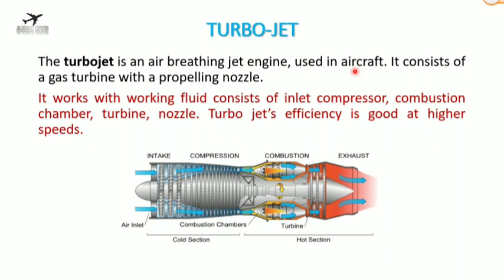The turbojet is an air-breathing jet engine used in aircraft. It consists of a gas turbine with a propelling nozzle. An air-breathing engine requires air to produce thrust, whereas rocket engines are called non-air-breathing engines as they carry their own oxidizer — oxygen — with them.